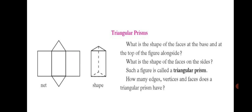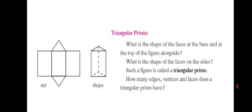How many edges can you see? In the figure we can count 3 at the sides, 3 on top and 3 at the bottom. So total 9. A triangular prism has 9 edges. How many vertices? 3 vertices on top and 3 vertices below, total 6 vertices.